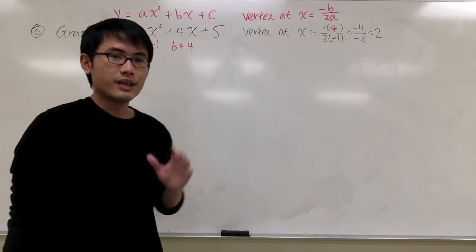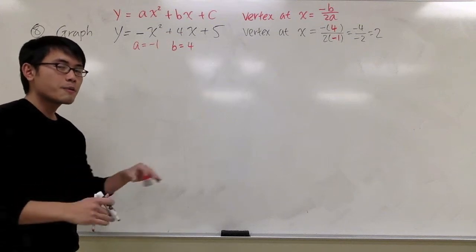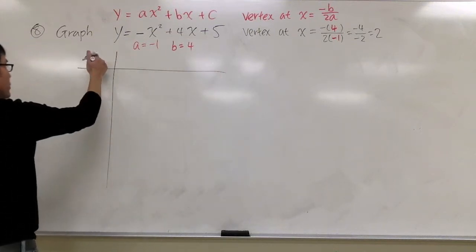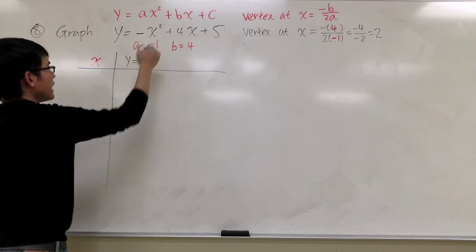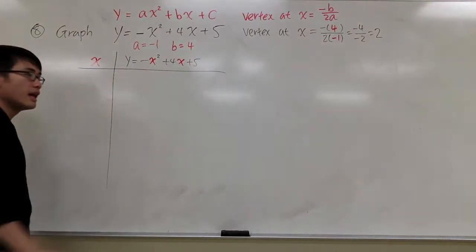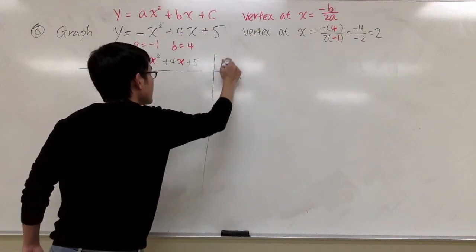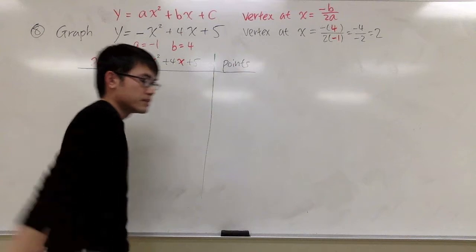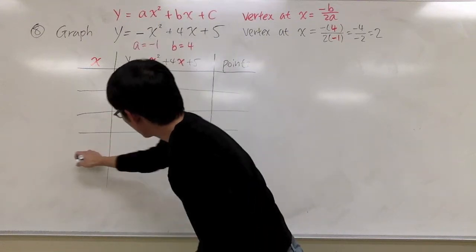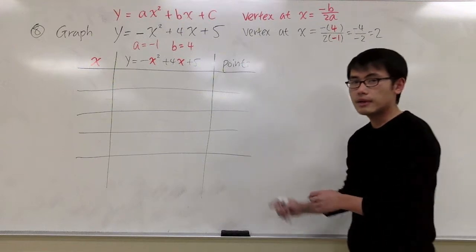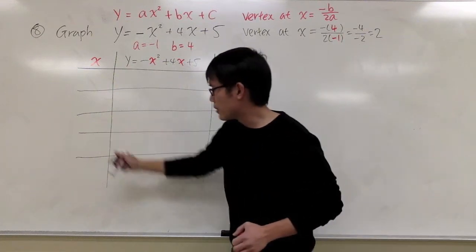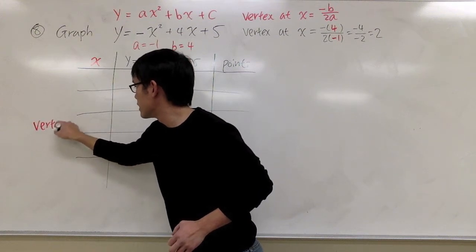Now we are going to create a table and put the vertex in the middle, then do the graph. The table will have columns for x, y equals negative x squared plus 4x plus 5, and the point. We need to put the x value for the vertex in the middle, so x equals 2 goes there — that's where the vertex is, the center.